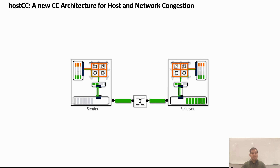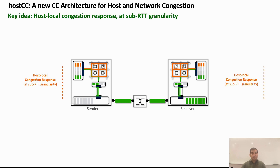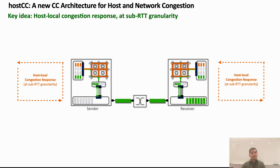We propose Host CC, a new CC architecture that handles both host and network congestion. The key idea in Host CC is a sub-RTT granularity host local congestion response to allocate host resources between network traffic and host local traffic. Host CC uses host local congestion response to ensure that network traffic is not starved even at sub-RTT granularity. At the receiver, Host CC uses host local congestion response to minimize queuing and packet drops at the host. It moderates host resources allocated to the network traffic at sub-RTT granularity to ensure that NIC queues are drained at the same rate at which the network traffic arrives at the NIC.